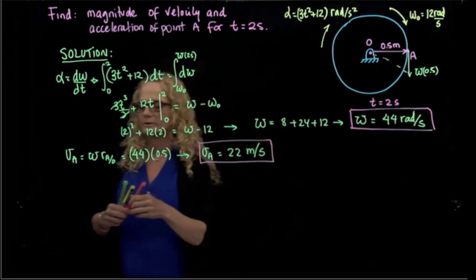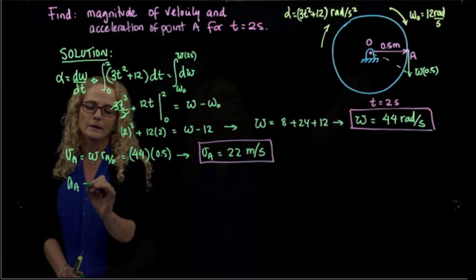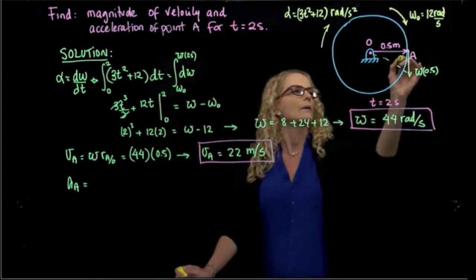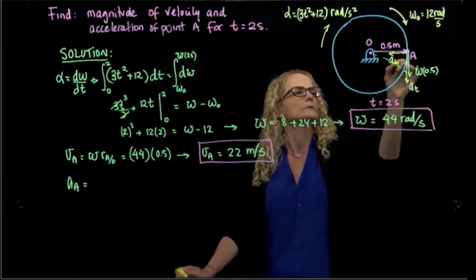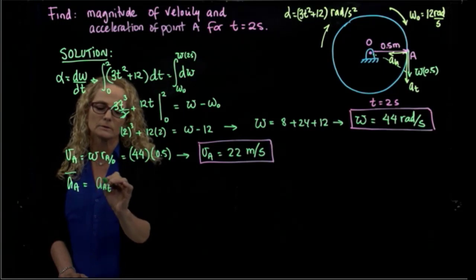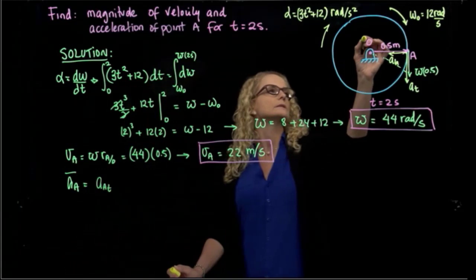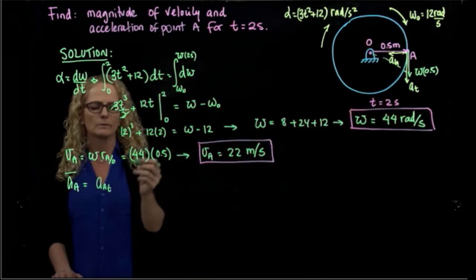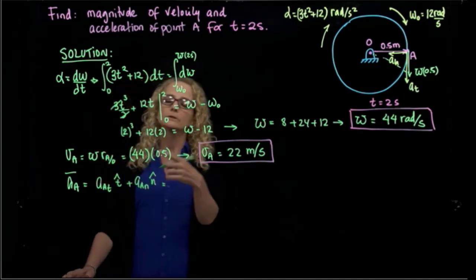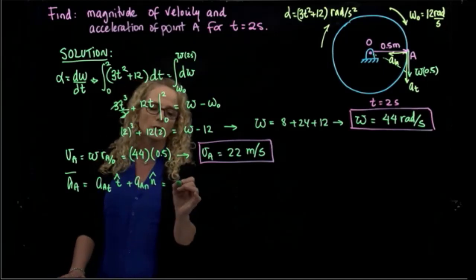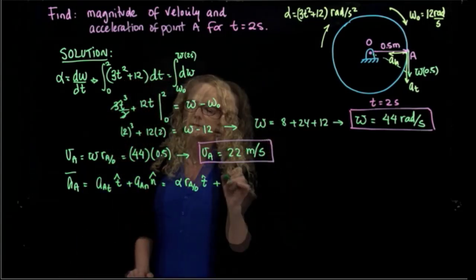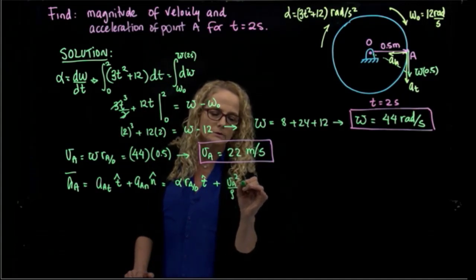For the acceleration at A, since we have curvilinear motion, we have both tangential acceleration and normal acceleration. The total acceleration has two components expressed in our coordinate system: the tangential acceleration, which is alpha times the radius in the tangential direction, plus the normal acceleration, which is the velocity of A squared over the radius of curvature.